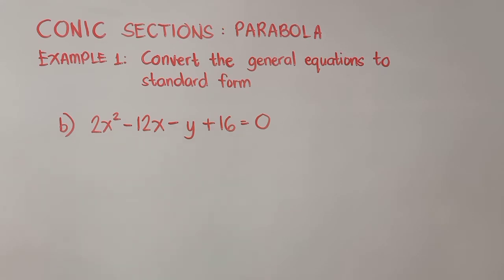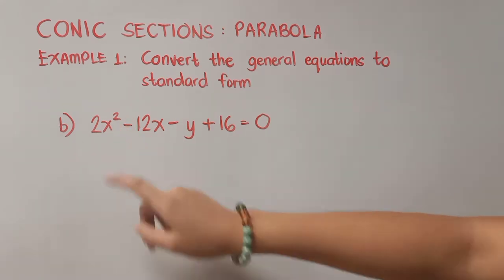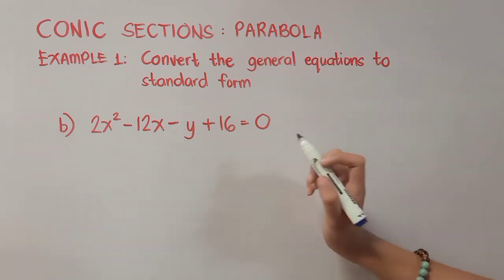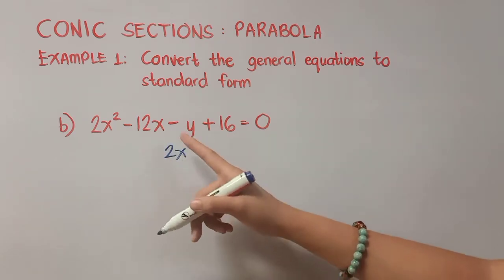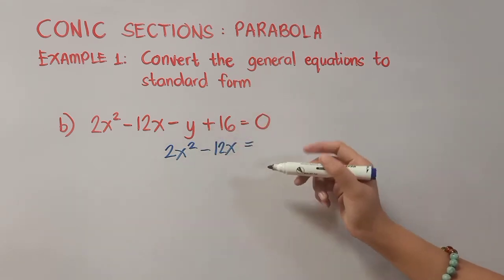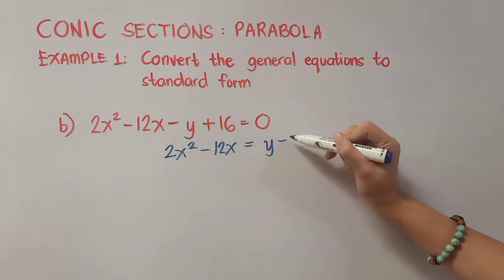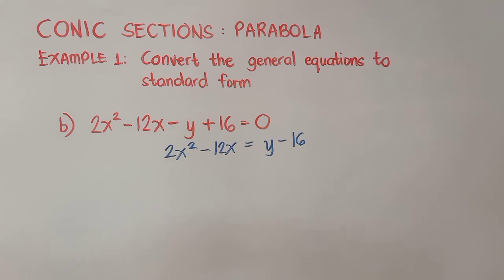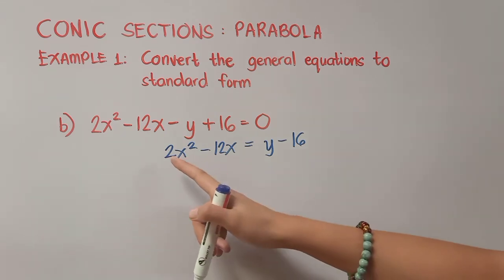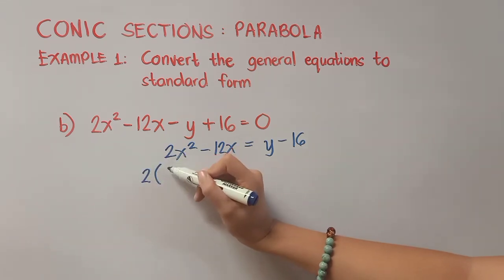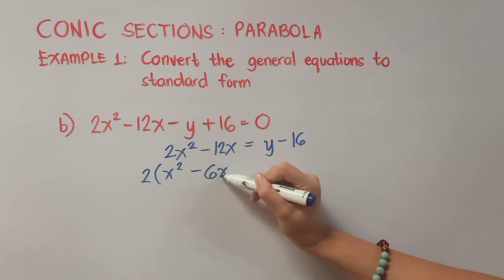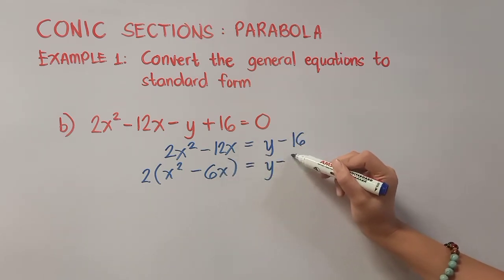We are now in letter B. As you can see, the variable x here contains the exponent 2. That means all terms with variable x shall be placed on the left side while the rest go to the right side. So we have 2x² minus 12x equals positive y minus 16. Now on the left side, 2 and negative 12 have a common factor of 2, so we place it outside the parenthesis: x² minus 6x.